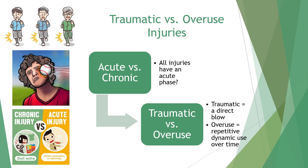Traumatic versus overuse injuries can be defined based upon the mechanism of the injury. Traumatic injuries are often the result of a direct blow. Overuse injuries, on the other hand, are the result of repetitive dynamic use forces over time, resulting in chronic micro-traumatic injuries.